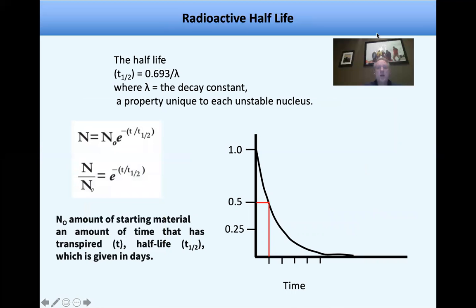So radioactive half-life is something that you should all be familiar with. It's a pretty intuitive concept. There's just a couple things to know. You have to know the formula that T1/2 equals 0.693 over lambda. And lambda is a decay constant unique to each unstable nucleus. Here is an actual formula. And you see N over N0 equals e to the minus T over T1/2. What you can do is you can substitute T1/2 equals 0.693 over lambda into this equation. And N0 is the starting material. And then T is the amount of time that has transpired. And T1/2 is the half-life itself.